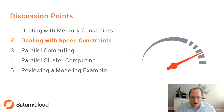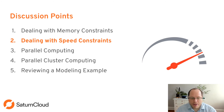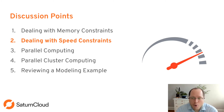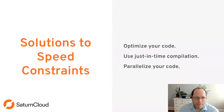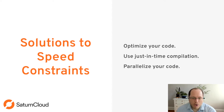Now that we've covered memory constraints, we'll talk about speed constraints — the next problem you'll face. Once everything fits into RAM on one or multiple machines, you'll have to deal with the speed consequences of working with large data. The three main options are: optimize your code, use just-in-time compilation, and parallelize the code. The first two we'll go over briefly, but we'll spend most time on parallelization.